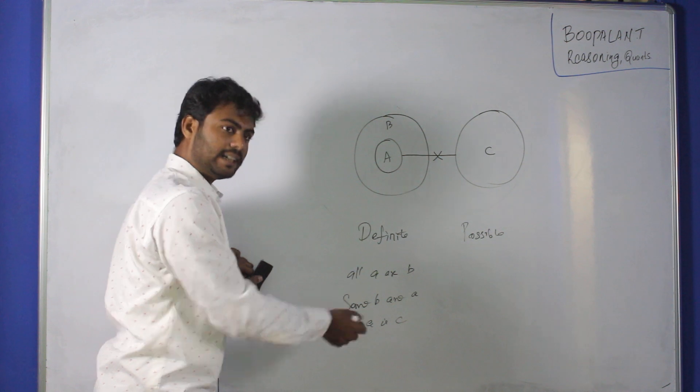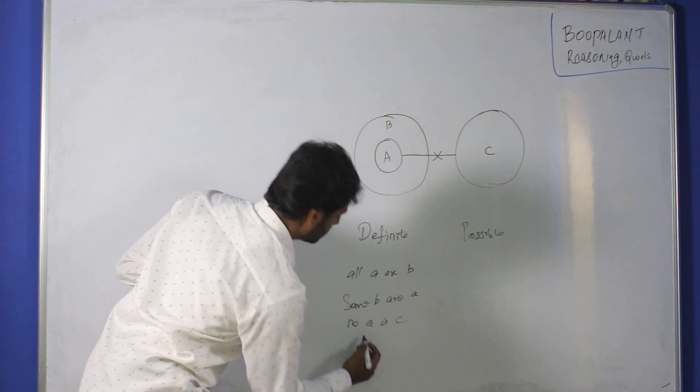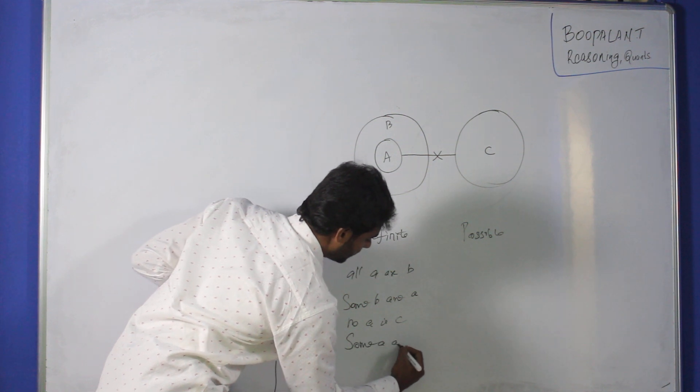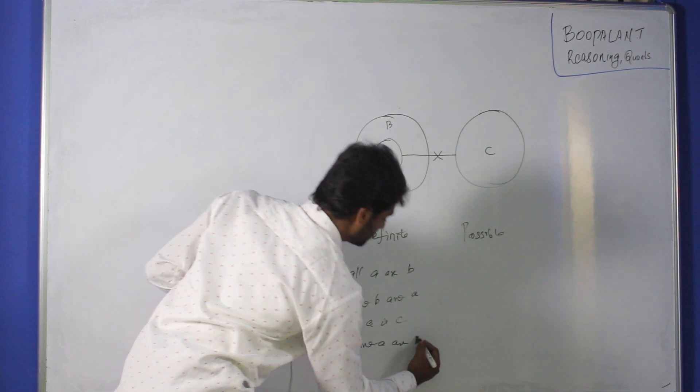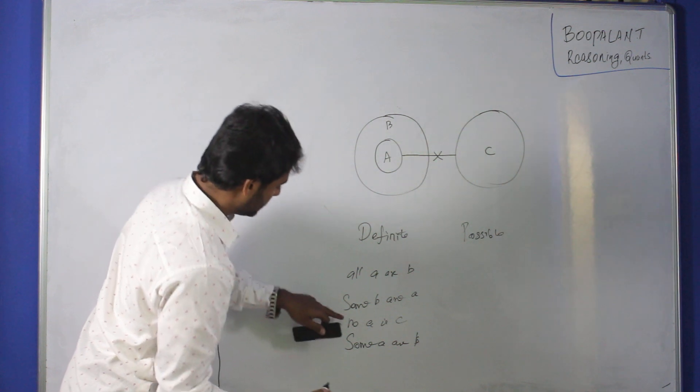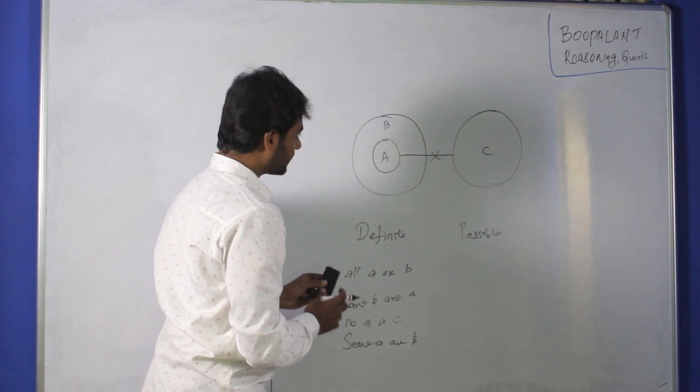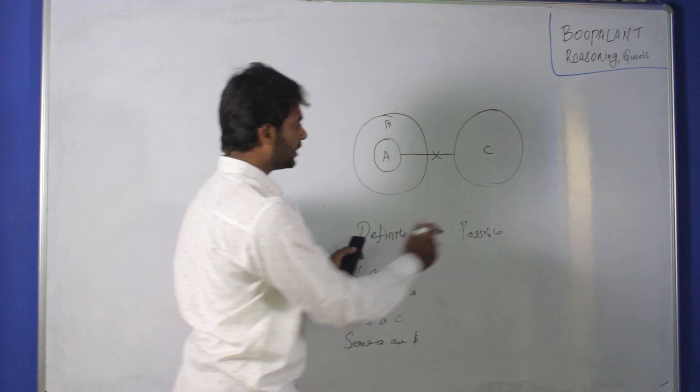So all is not, no A is not, because we recorded that. Some A or B, this is also possible. Some B or A, this is also possible. These are definite conclusions, these are possible conclusions.